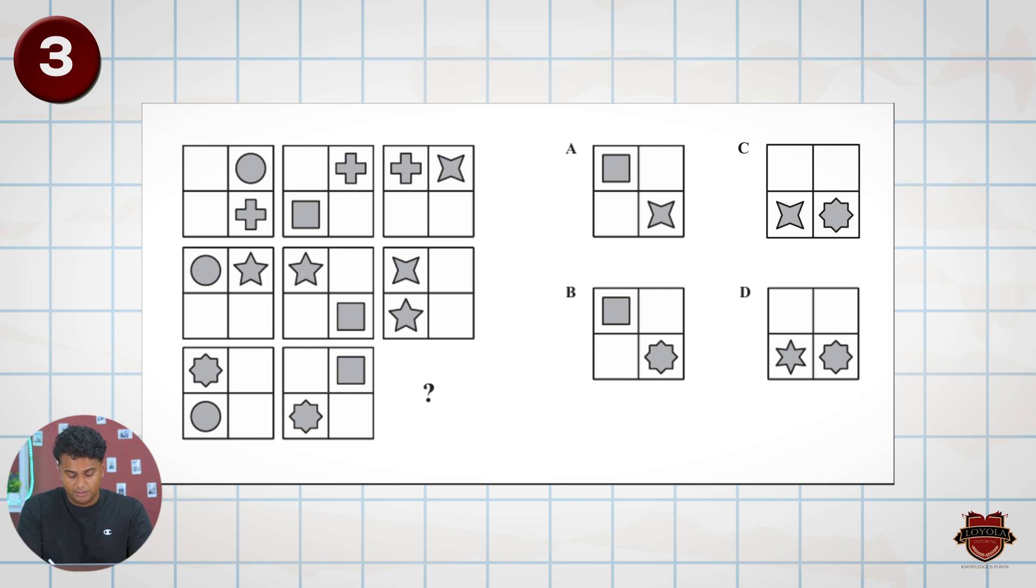So looking at the last image, we know that there has to be a ninja star at the bottom, and going across, there will be an octagon. So straight away, we can cancel out A, cancel out B, cancel out D, and we're left with C.